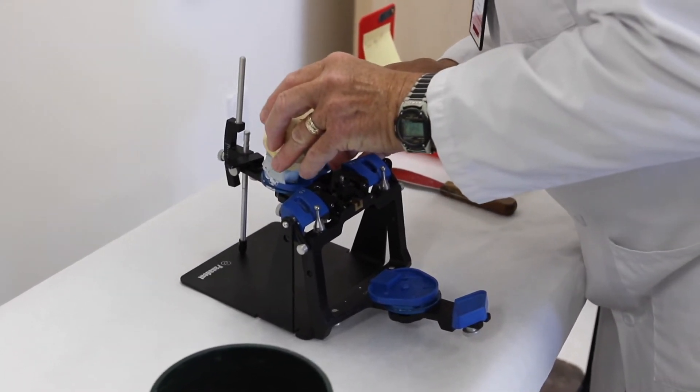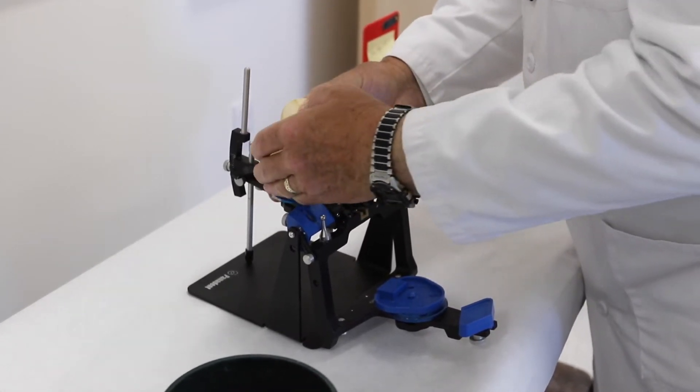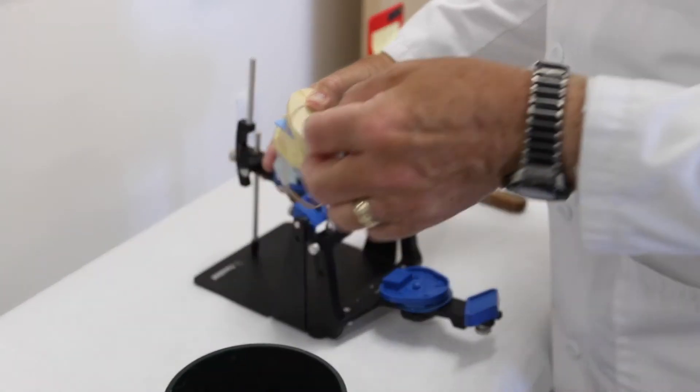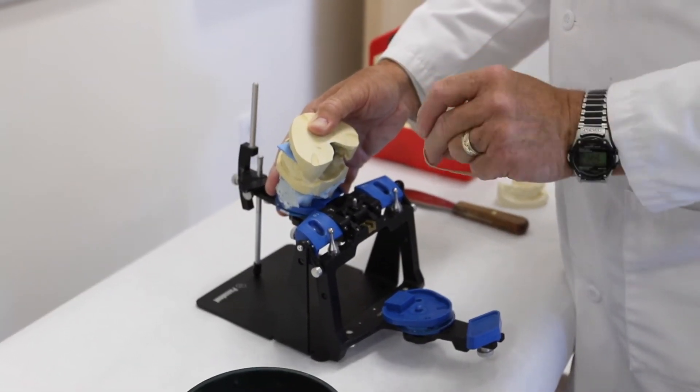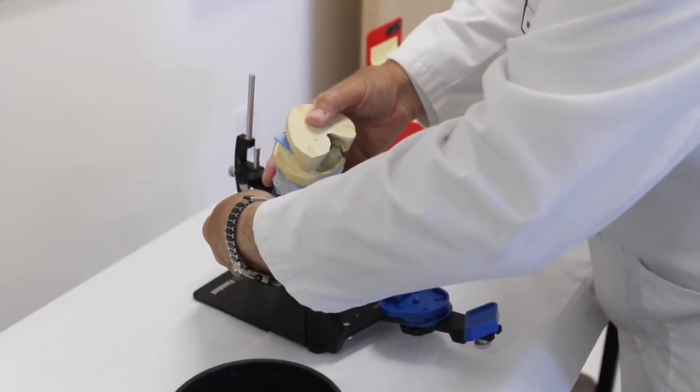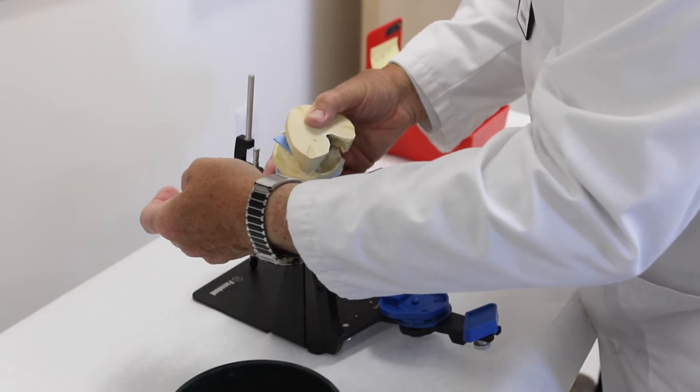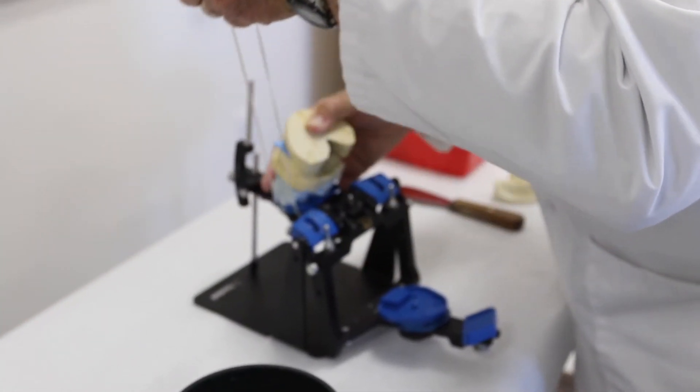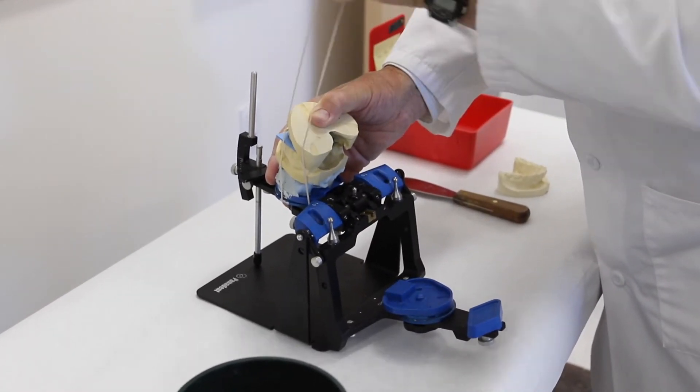So now you've got it set on the maxillary, place the mandibular. Also at this point you get an elastic band and you take it, wrap it around and underneath the main knob on the upper member of the articulator, and you carefully stretch it out and over the mandibular model.